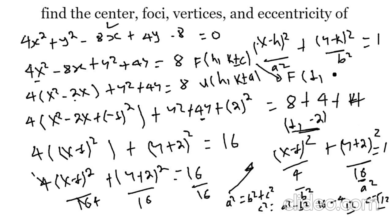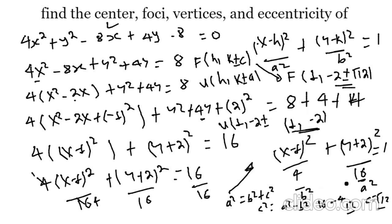So the focus is at K plus or minus radical 12, with H equal to 1: focus at (1, -2 plus radical 12) and (1, -2 minus radical 12). The vertex is at H equals 1, K plus or minus a: vertex at (1, -2 plus 4) equals (1, 2) and (1, -2 minus 4) equals (1, -6).